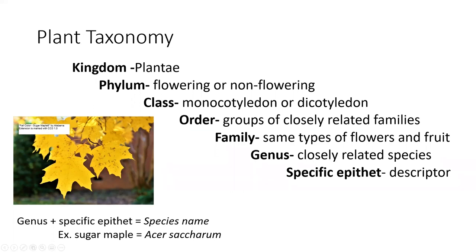For example, sugar maple is genus Acer and specific epithet saccharum, so the species name for sugar maple is Acer saccharum. That's two names, so we call it binomial nomenclature — bi meaning two. When you write them, the genus is always capitalized, the specific epithet is never capitalized, and both are always italicized — not underlined, not bold.